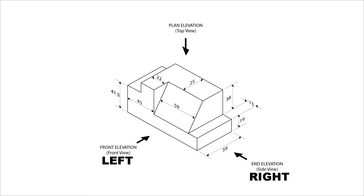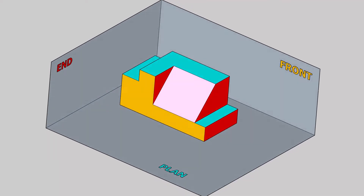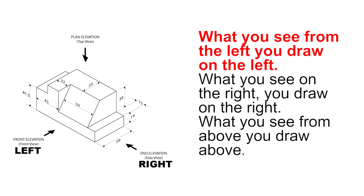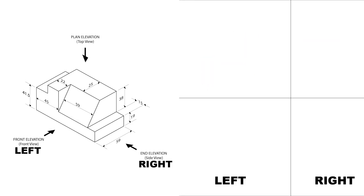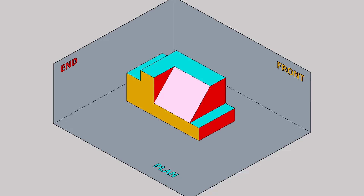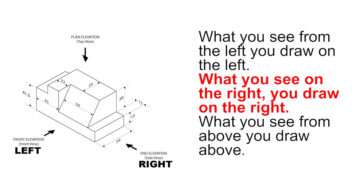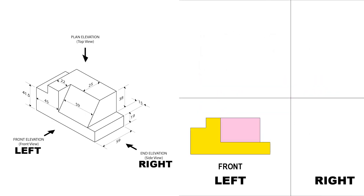Let's see an animation for the front view. What you see on the left, you draw on the left. The front view is on the left, therefore we will draw it on the left. Let's see the animation for the end view. What you see on the right, you draw on the right. The end view is on the right, therefore we will draw it on the right.